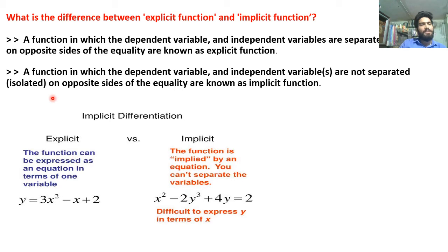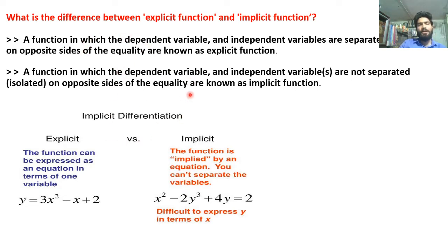Now let's discuss implicit functions. A function in which the dependent variable and independent variables are not separated or isolated on opposite sides of the equality — that is, the equal to sign — is known as an implicit function. Explicit function में हमने dependent और independent variable को equal to के sign के opposite में arrange किया था, but implicit function में ऐसा करने की कोशिश करें तो वो separate नहीं होंगे। जैसे x², y³, और y — अगर y को common निकाल भी लो, तो completely y = f(x) के form में नहीं आएगा। ऐसे function को हम बोलेंगे implicit function।